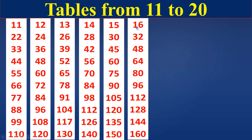16 times table. 16 ones are 16. 16 twos are 32. 16 threes are 48. 16 fours are 64. 16 fives are 80. 16 sixes are 96. 16 sevens are 112. 16 eights are 128. 16 nines are 144. 16 tens are 160.